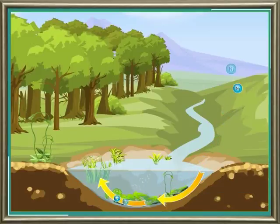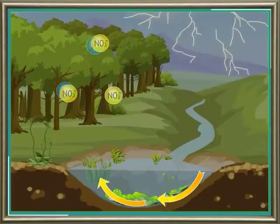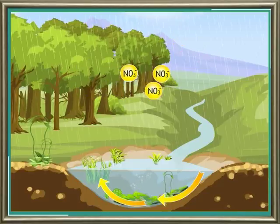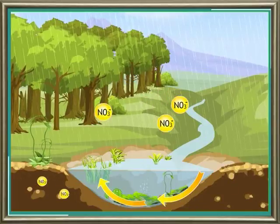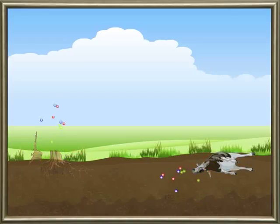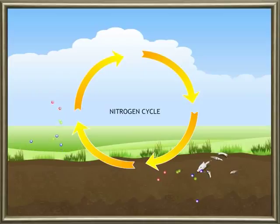This ammonia is utilized by the plants. Nitrogen in the atmosphere is also converted to nitrates by lightning. These nitrates dissolve in rain and reach the earth, where plants procure them from the soil. When plants and animals die, they decompose and the nitrogen is released into the atmosphere, and some of it may be fixed in the soil. Thus, the cycle goes on.